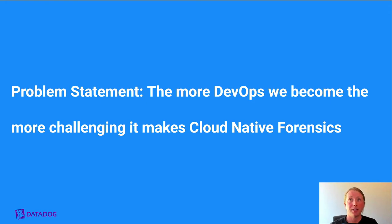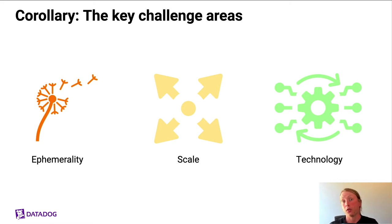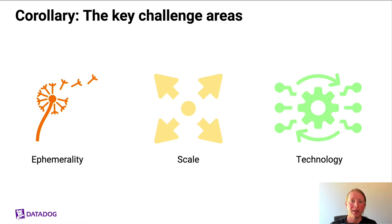Which brings us to the problem statement: the more we embrace the idea of DevOps and cattle, not pets, the more challenged some of these forensic processes become. There are three distinct pillars that continue to challenge us in cloud-native forensics: ephemerality or short-lived instances; scale, which is the number of workloads we might have to perform forensics on; and scope — maybe it's a single AWS account or one Kubernetes cluster, or it could be hundreds of Kubernetes clusters. Also, the very technologies we put in place to help us do security sometimes actually hinder us.